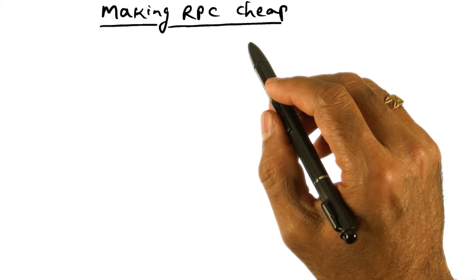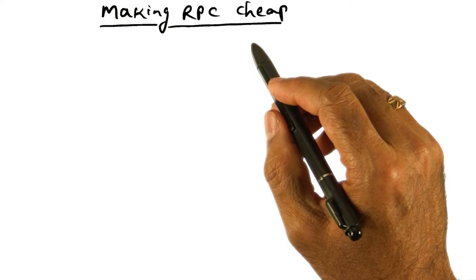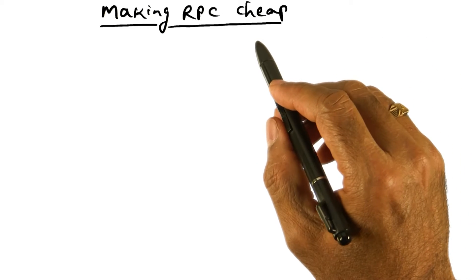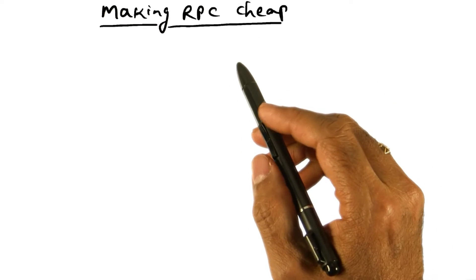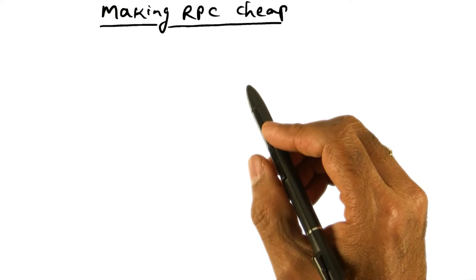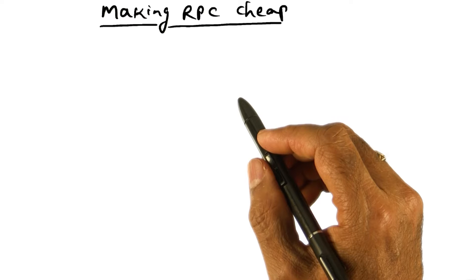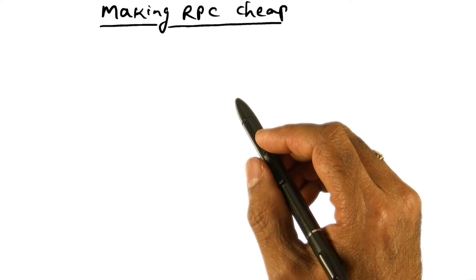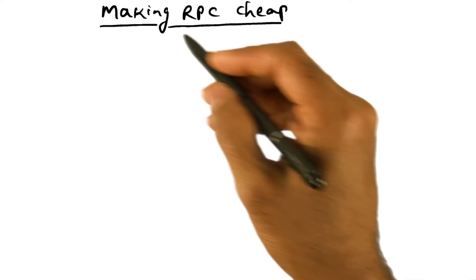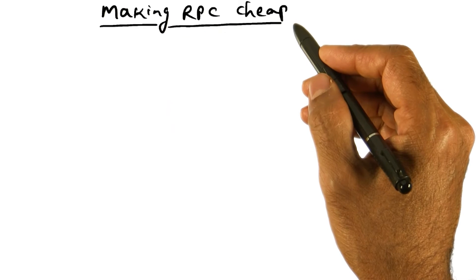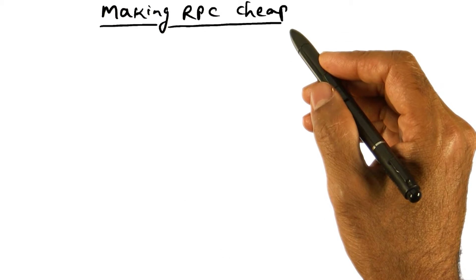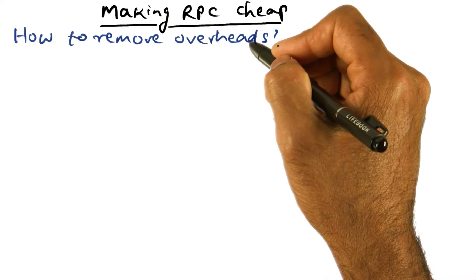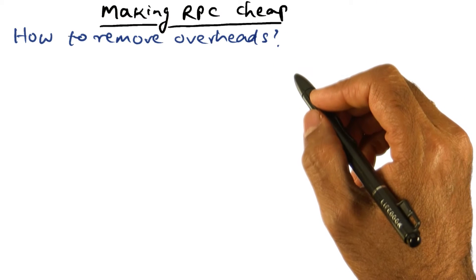If RPC has to be a viable mechanism for structuring operating system services above the kernel using the client-server paradigm, then it is important to reduce this overhead. Now let's see how we can reduce the overheads and make RPC cheap enough that you want to use it in building client-server systems. How do we remove these overheads?